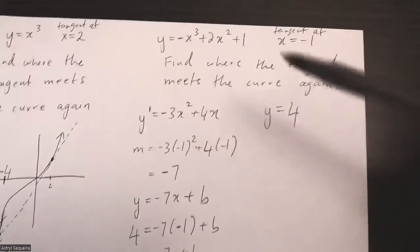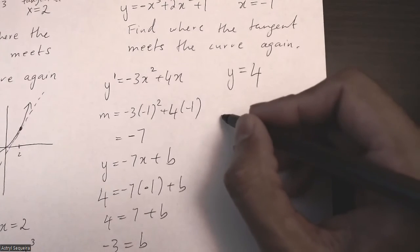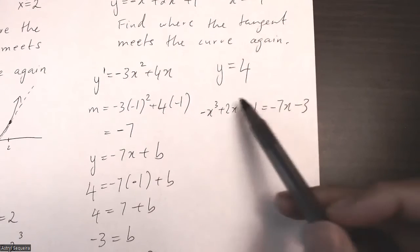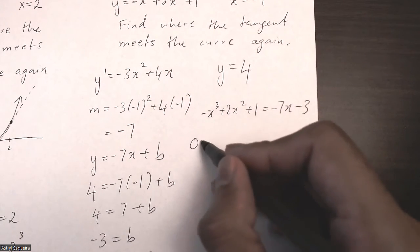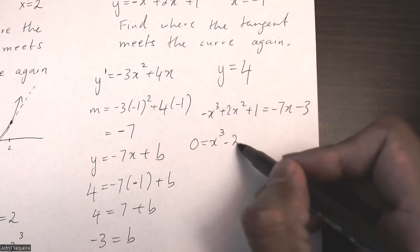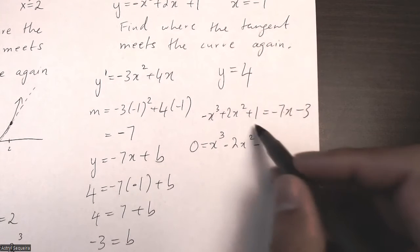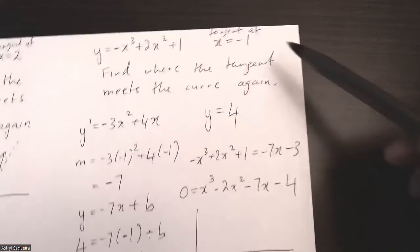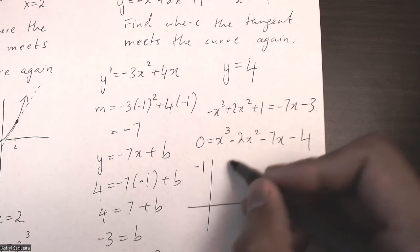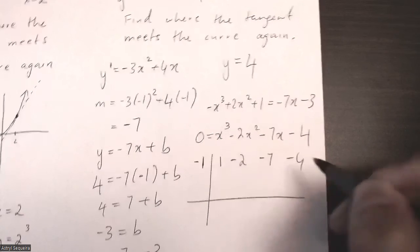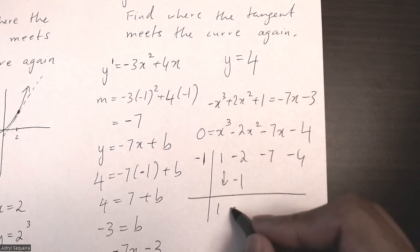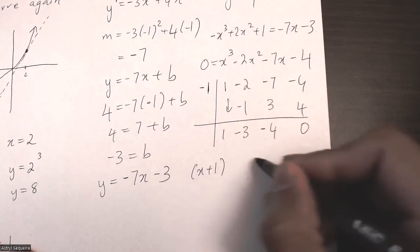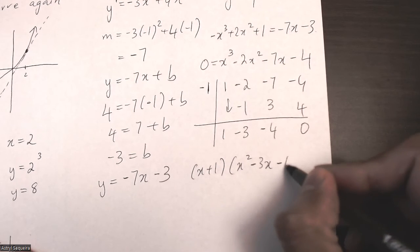I'll equate the tangent line with the original equation to find the other intersection point: negative x cubed plus 2x squared plus 1 equals negative 7x minus 3. Moving everything to the right side to keep the leading term positive gives x cubed minus 2x squared minus 7x minus 4 equals zero. Using synthetic division with x equals negative 1, and coefficients 1, negative 2, negative 7, negative 4, I'm left with x plus 1 times x squared minus 3x minus 4 equals zero.